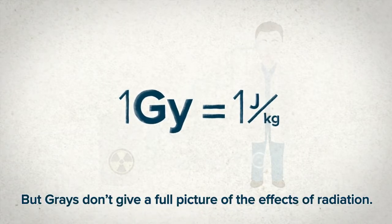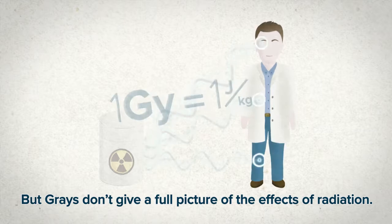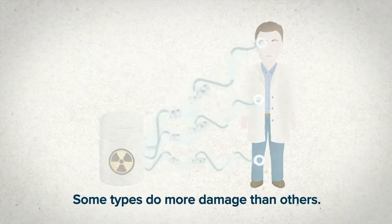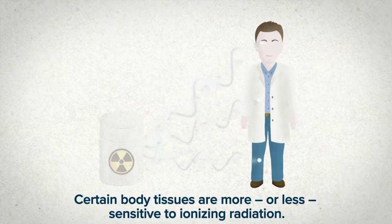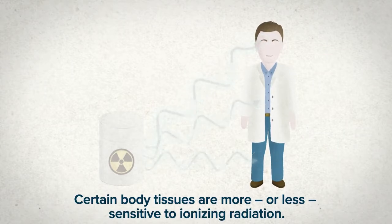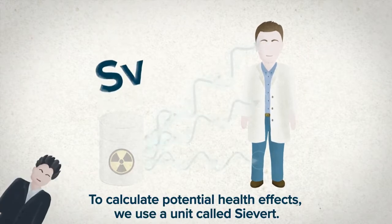But grays don't give a full picture of the effects of radiation — some types do more damage than others. Certain body tissues are more or less sensitive to ionizing radiation. To calculate potential health effects, we use a unit called Sievert.